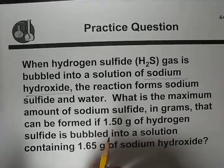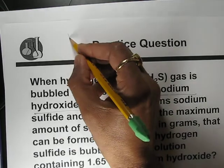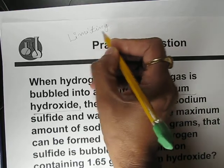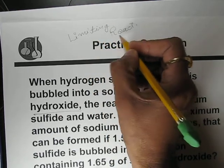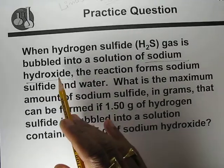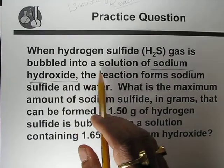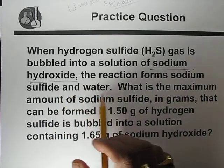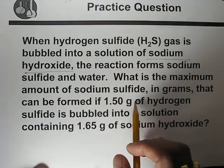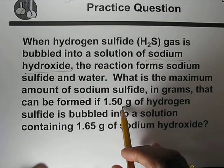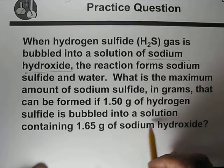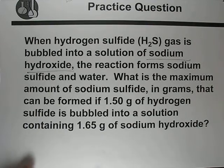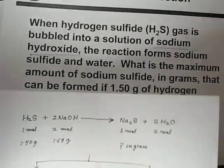This is a very good example of a limiting reactant problem. When hydrogen sulfide H₂S gas is bubbled into a solution of sodium hydroxide, the reaction forms sodium sulfide and water. What is the maximum amount of sodium sulfide in grams that can be formed if 1.5 grams of hydrogen sulfide is bubbled into a solution containing 1.65 grams of sodium hydroxide?